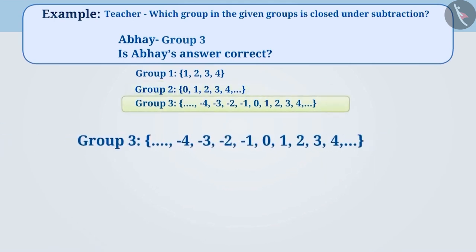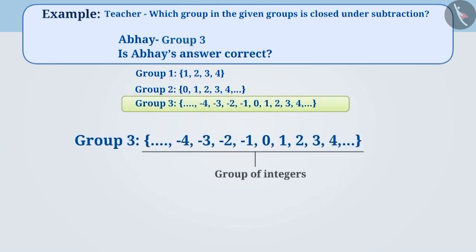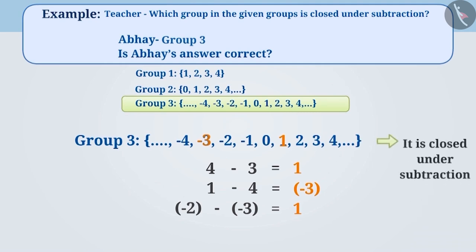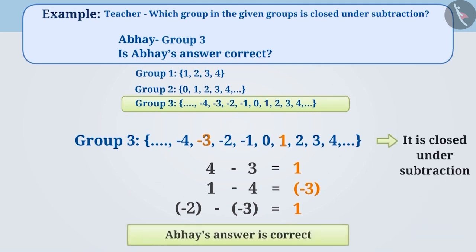Now we will talk about group 3. It is a group of integers. Take any two numbers from this group and subtract them. The numbers obtained as a result — 1, minus 3, and 1 — are all part of this group. Therefore, we can say that group 3 is closed under subtraction. So now we know Abhay's answer is correct.